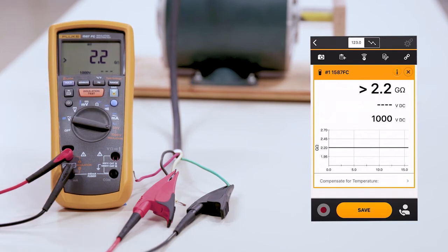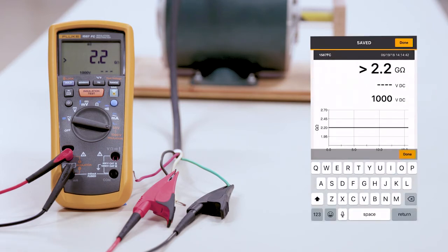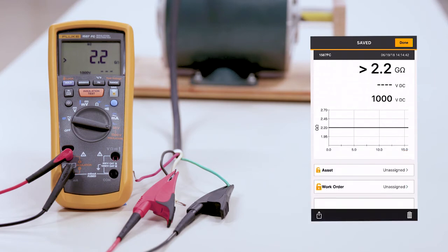Now that we've run that test, let's go ahead again and save it. We'll make our note. This time it was the black leg. We'll hit our Done button. And we'll go ahead and hit our Done button up at the top.